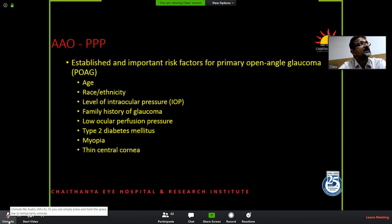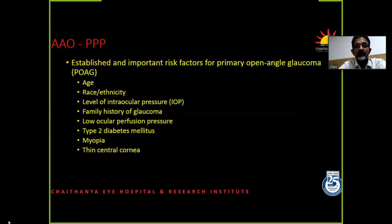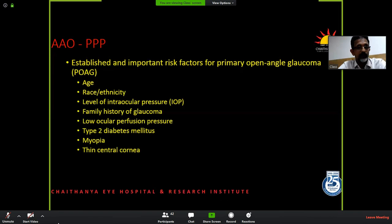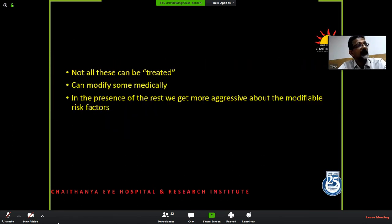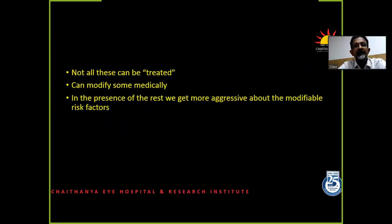Established risk factors for primary open-angle glaucoma are plenty — age, race (primarily they are talking about African-Americans), level of IOP, family history, low perfusion pressure, type 2 diabetes, etc. But not all these can be treated in the sense that we cannot modify quite a few of these.